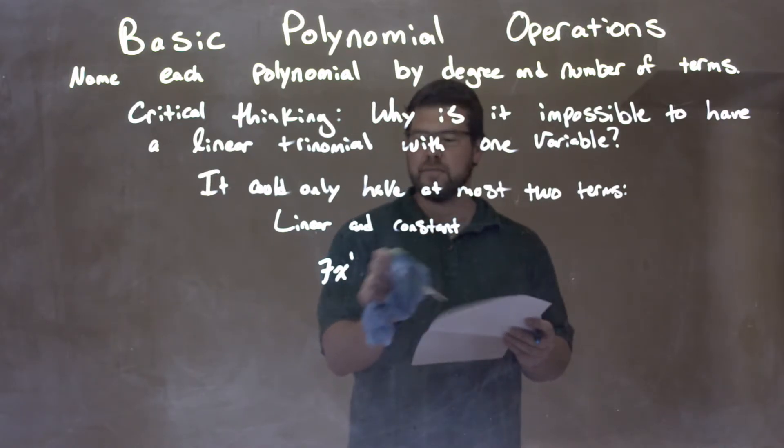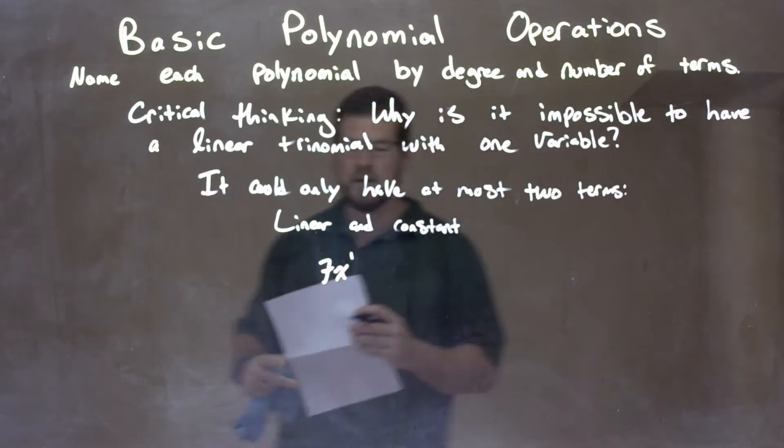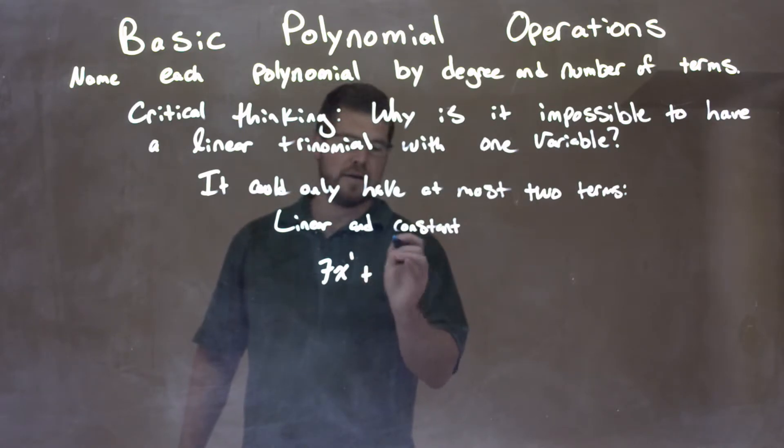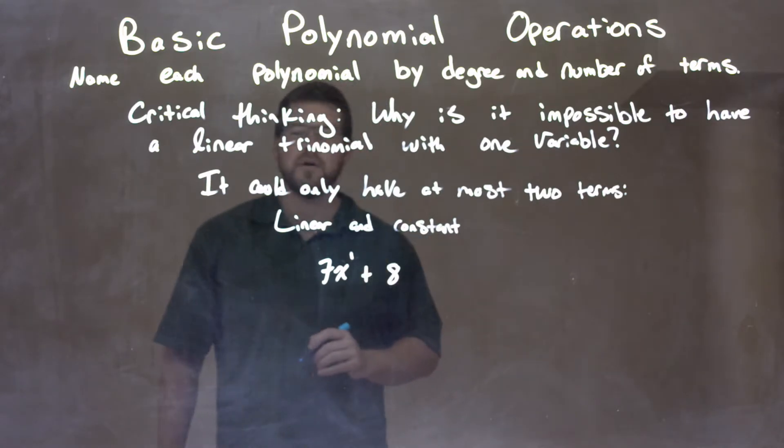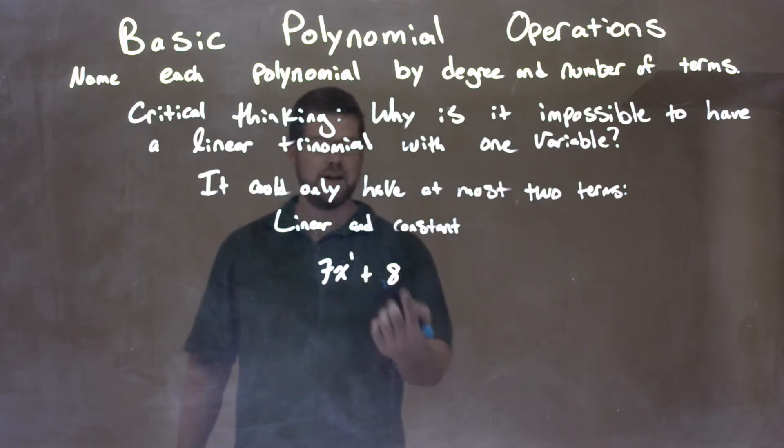And then we go down, so this is just an example again, to a constant. I'm going to have plus, I don't know, 8. So now we would have a linear constant, and again, most could have is two terms, and I could have other constants there, but again, I would have to bring them and simplify them together, all the constants together.